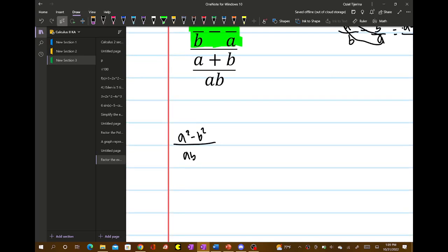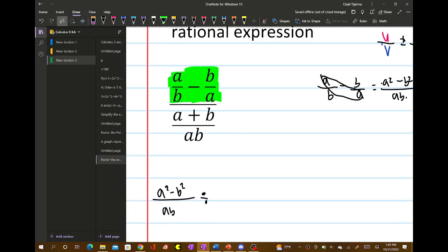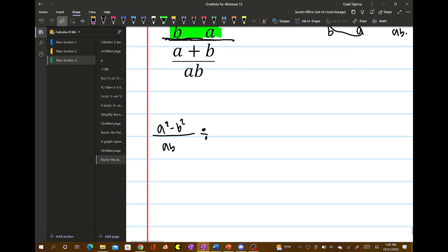And then it's being divided. So when you have a fraction like this, this big fraction means that it's being divided by a plus b over ab.